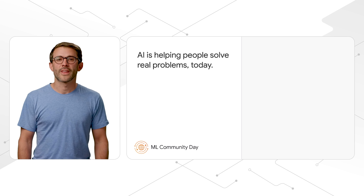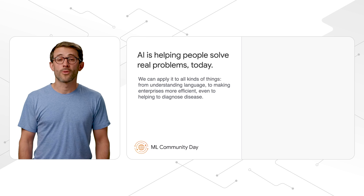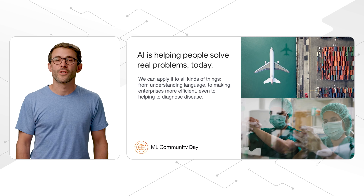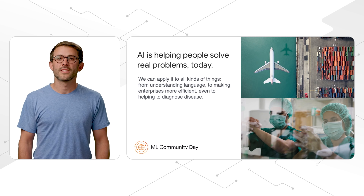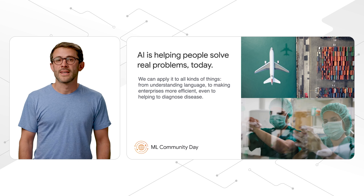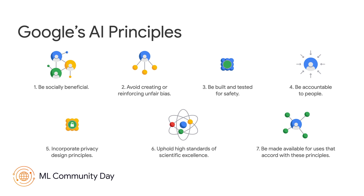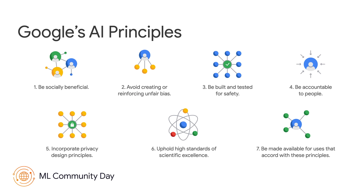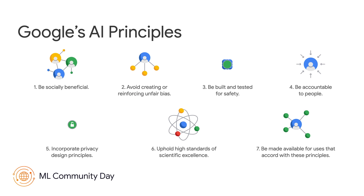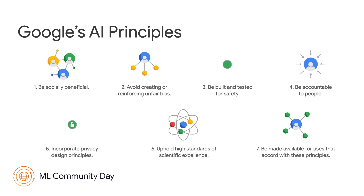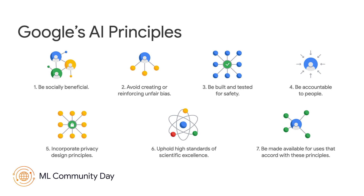It may go without saying that AI is transforming the world we live in. As creators of new products, it's staggering the range of new opportunities created by AI across so many different sectors. And yet, for AI to be truly useful and valuable, it needs to be built, tested, and operated responsibly. At Google, we have a set of principles that guide our approach to Responsible AI. These include the seven listed on this slide, as well as four applications of AI that Google will not pursue.